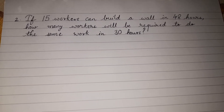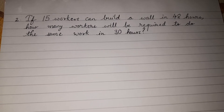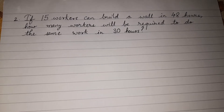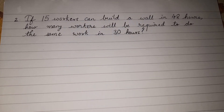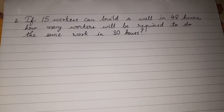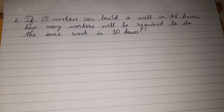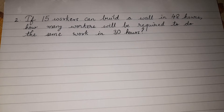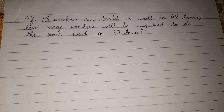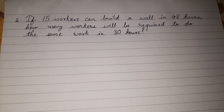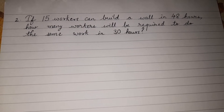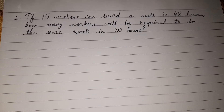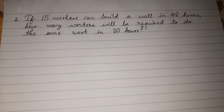We will read the problem and try to understand: 15 workers can build a wall in 48 hours. If we increase the number of workers, what will happen? The number of hours taken for building that wall will get reduced. So if one quantity increases the other quantity is decreasing — this is inverse proportion or inverse variation.